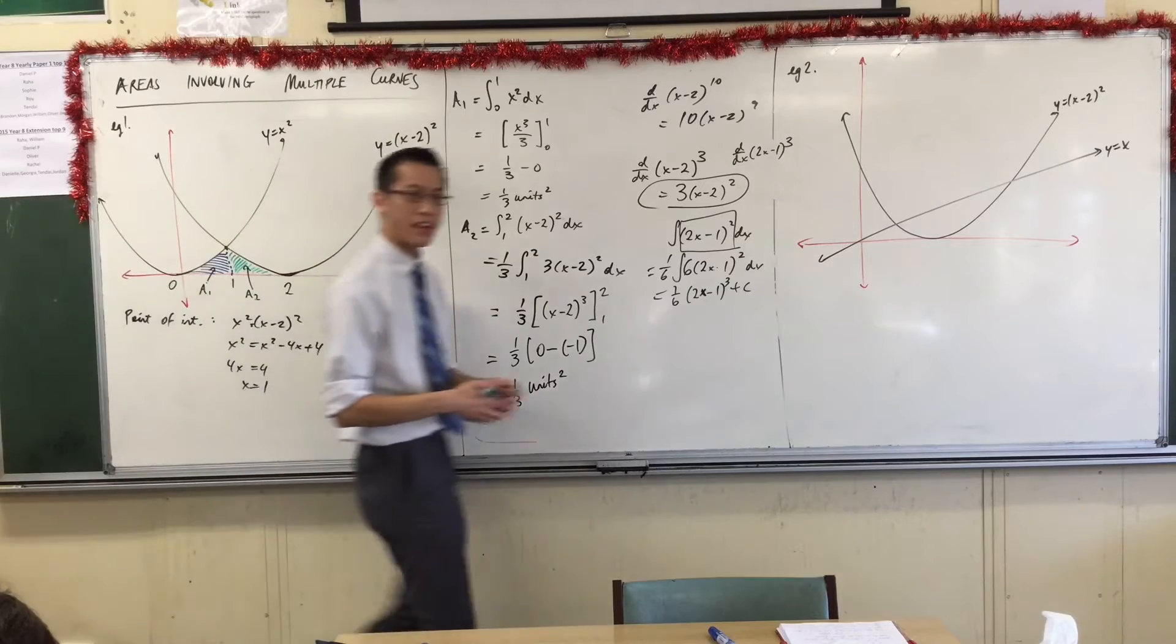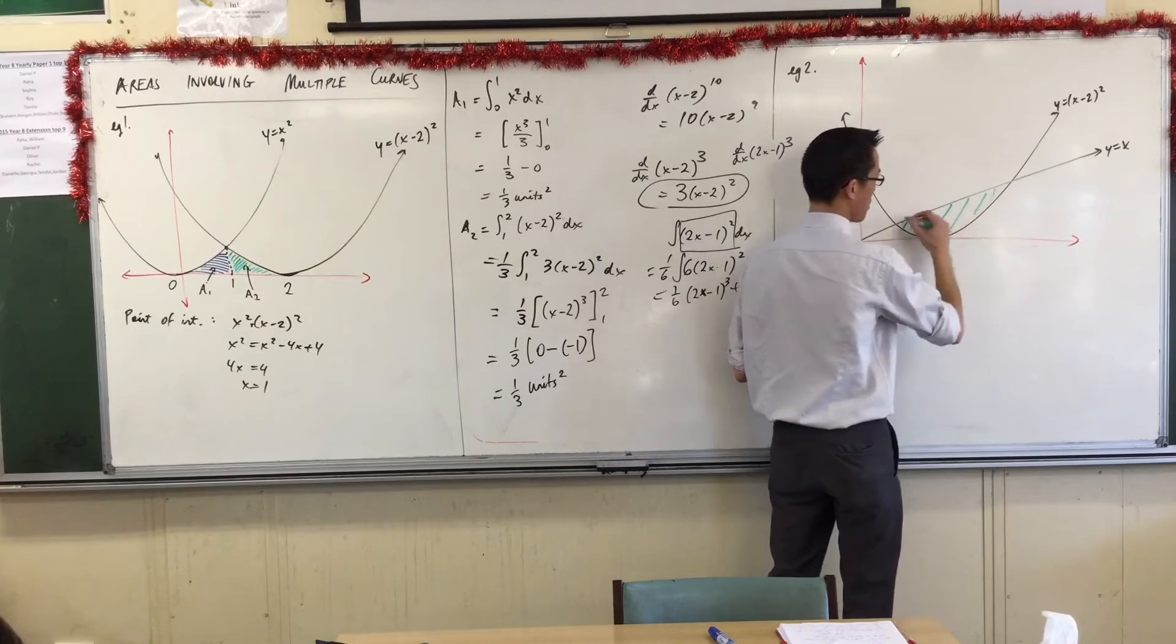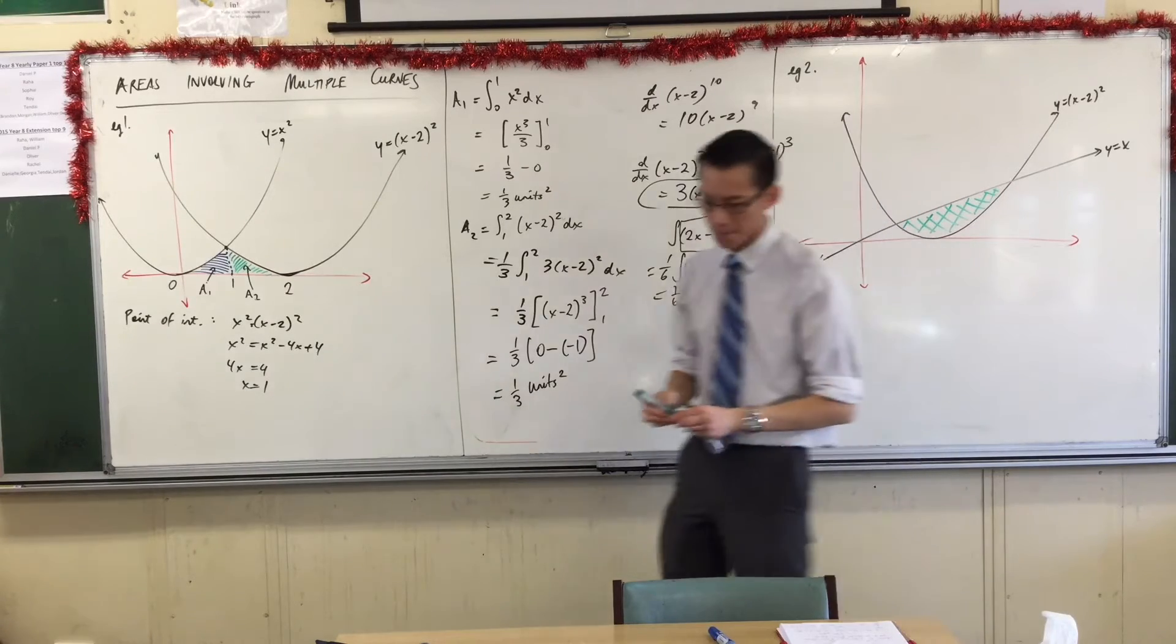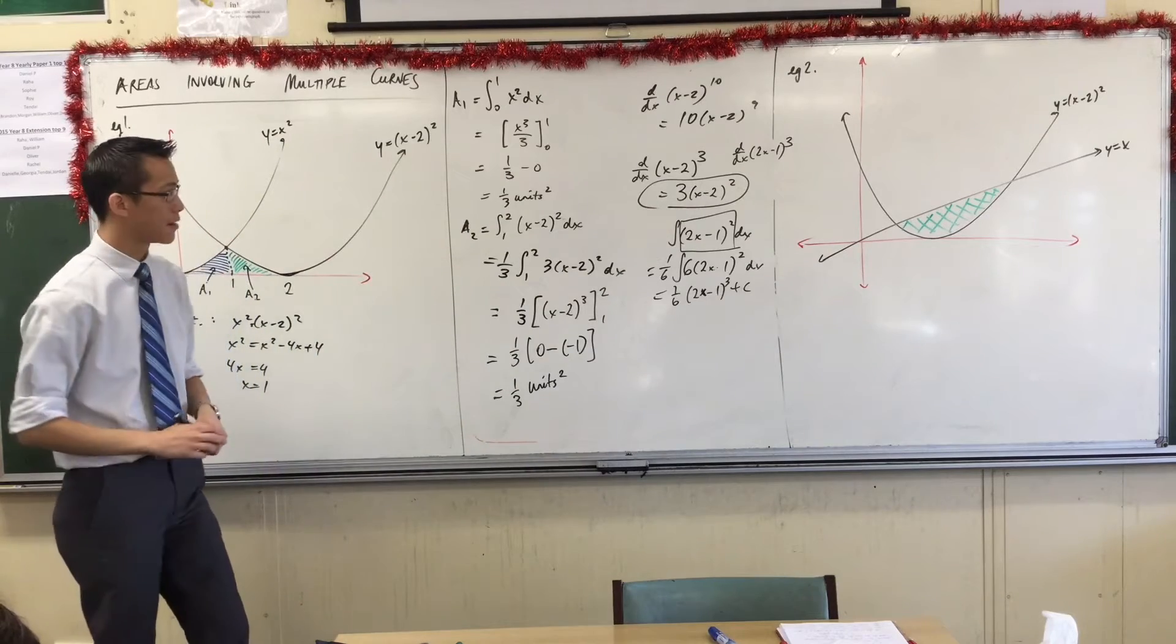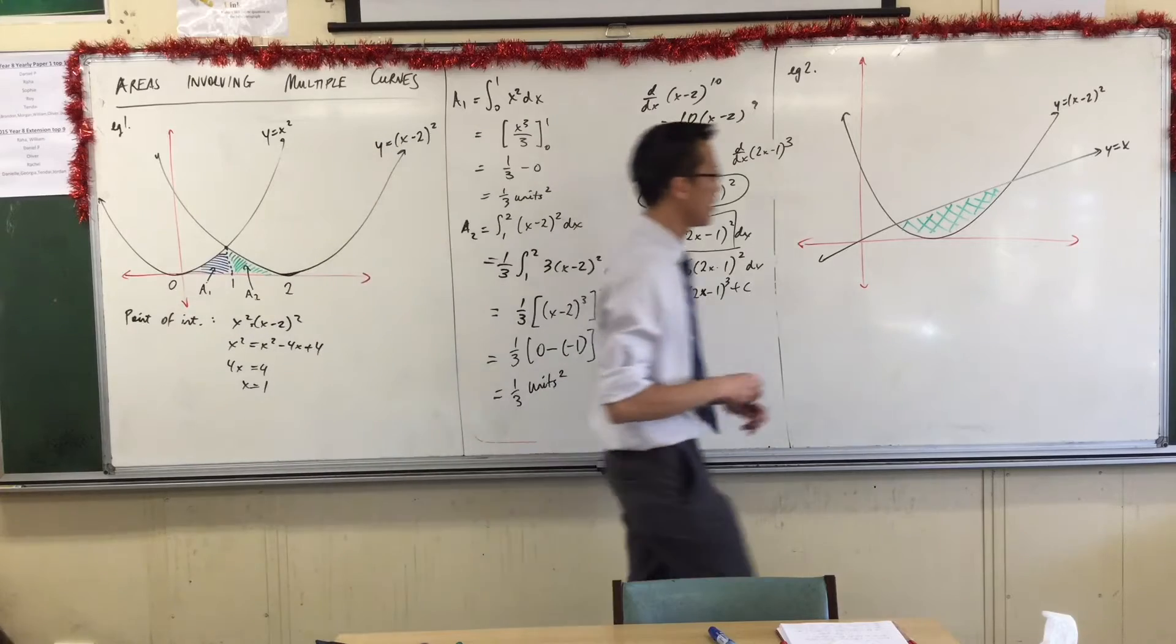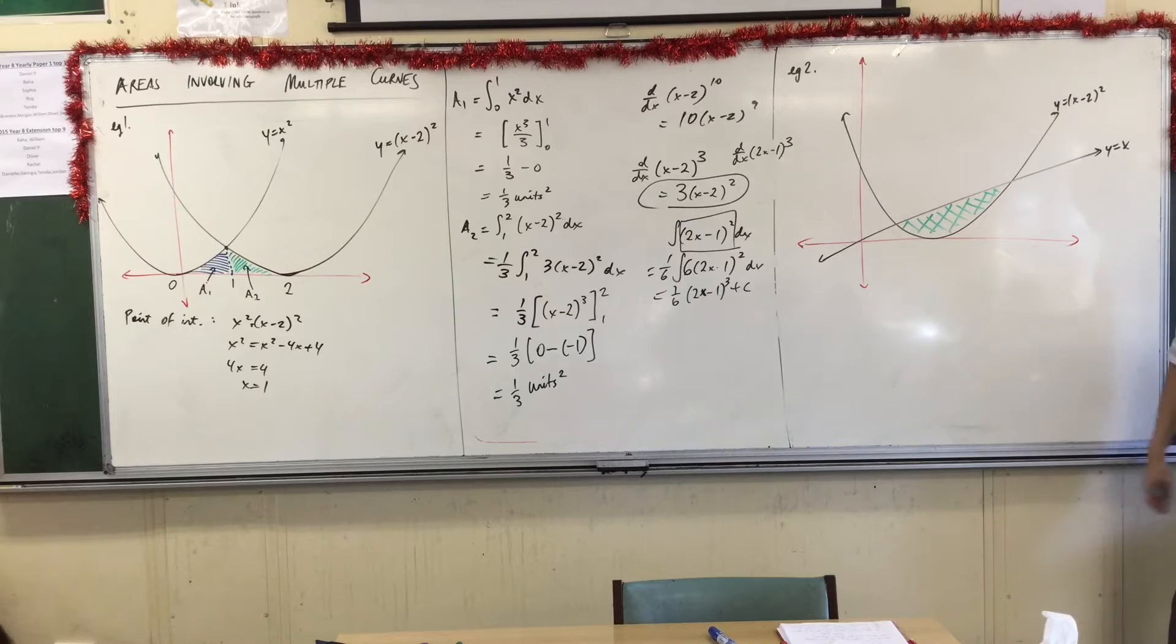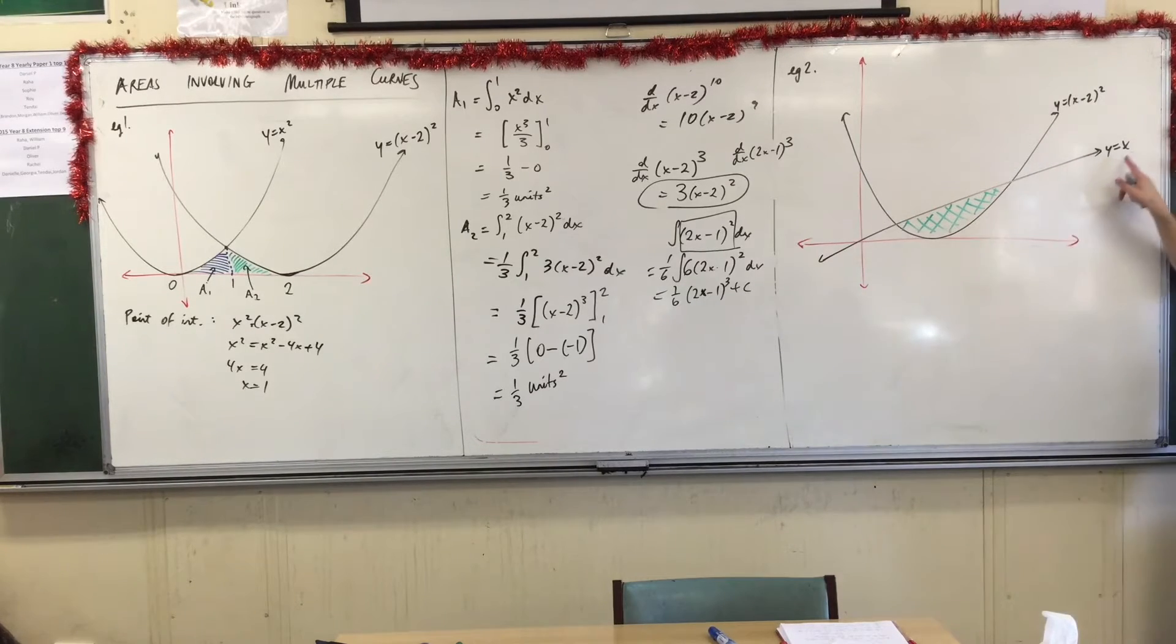I need to consider two integrals. The area I'm after is the one between the two curves. This is the area I'm interested in. Now, in order to work out this area, there are two integrals in my head that I can use to calculate this. Firstly, if I integrate over this interval, by the way, I don't know what the interval is yet, but we'll find out shortly. What area will I get? I won't get this area, will I?